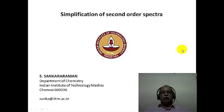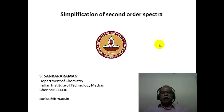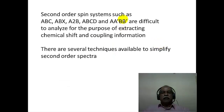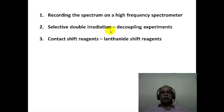Welcome to module 7 of the course on application of spectroscopic methods in molecular structure determination. In module 6, we considered second order effects on the NMR spectrum. Second order spectra are fairly complex, and we saw many examples. We realized how difficult it is to extract delta values and J values from them. In this module, we will consider certain techniques used for the simplification of second order spectra.